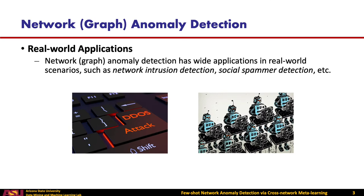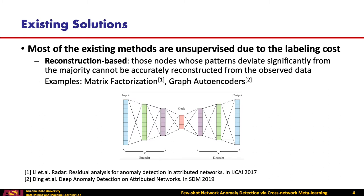Network Anomaly Detection or graph anomaly detection has wide applications in real-world scenarios. For example, network intrusion detection, social spammer detection, as the existence of even few anomalies could cause extremely detrimental effects. The problem of network anomaly detection has received much attention in both the industrial and academic communities. As we know, it is costly and labor-intensive to obtain the label information of anomalies, so network anomaly detection methods are usually developed in an unsupervised manner.